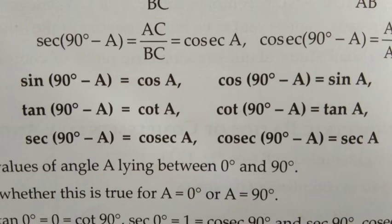When two angles sum to 90 degrees, they are called complementary angles. We will look at the trigonometric ratios for complementary angles.